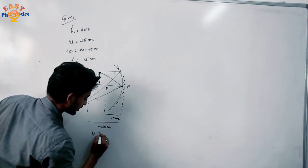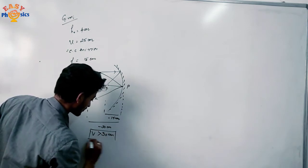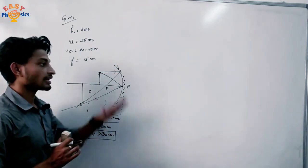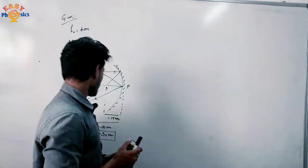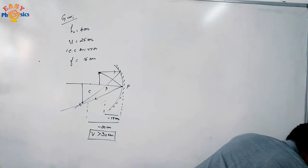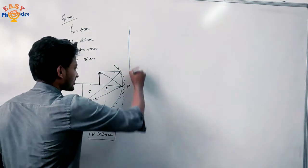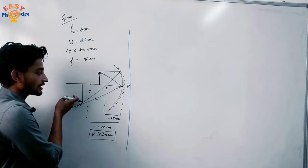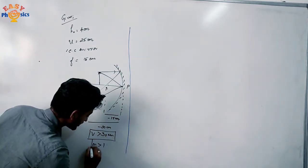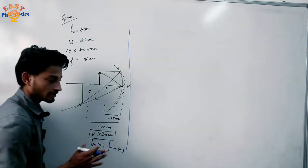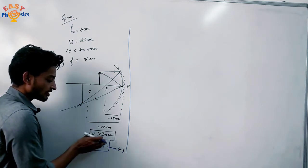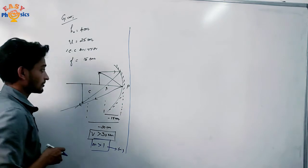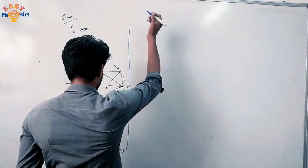Now the image distance is greater than 30 cm. We have a question about the ray diagram — we are not showing the focal length, then we will show the ray diagram. Now the magnification: this is an enlarged image. The magnification is greater than 1. It is negative — this is because it is a real and inverted image.